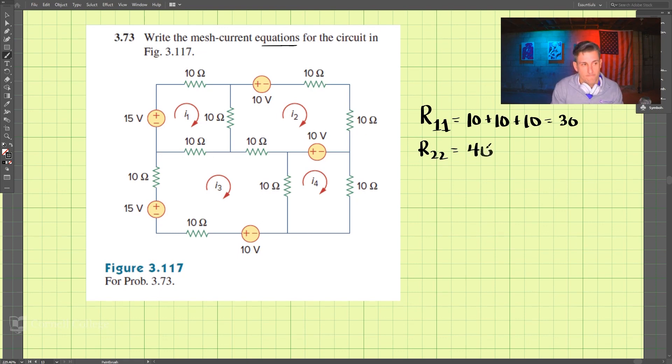In loop three, we have one, two, three, four, five resistors, so that is 50 ohms. And then lastly in four we have two, one two, and so that's 20 total ohms.